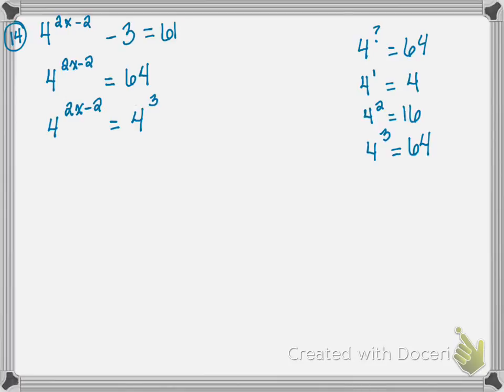Now we have a property that tells us when the bases are the same—and my bases here are both 4—then the exponents are equal to each other. So I can rewrite this as 2x minus 2 equals 3.